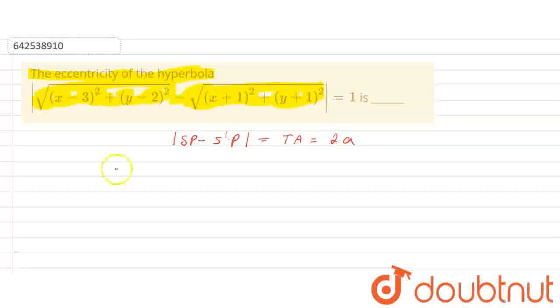On comparing with our given equation, we can see that the transverse axis TA equals 2a, which equals 1. And P is any point (x, y) on the hyperbola.